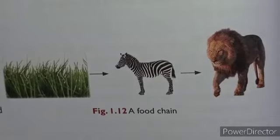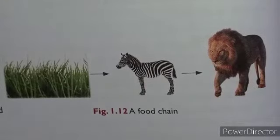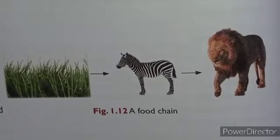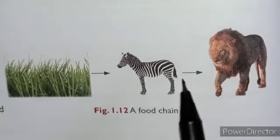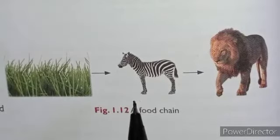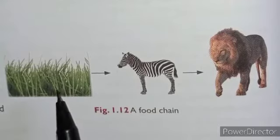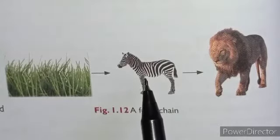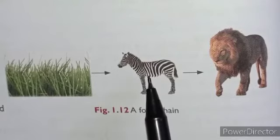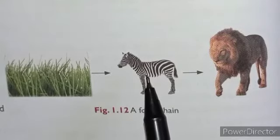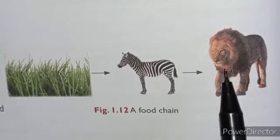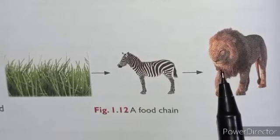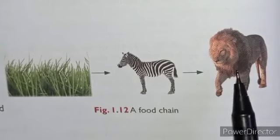For example, grass is eaten by a zebra. The zebra is a herbivore — it eats only plants. The zebra is then eaten by a lion. The lion is a carnivore, so it eats only the flesh of other animals.